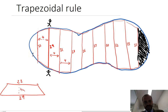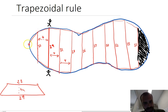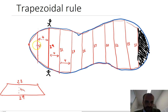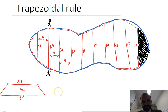One more thing: because this is a lake and we're starting from this point, the first trapezium is actually a triangle. It looks like a triangle, not a trapezium, but it's just a trapezium with an 'a' value of 0.